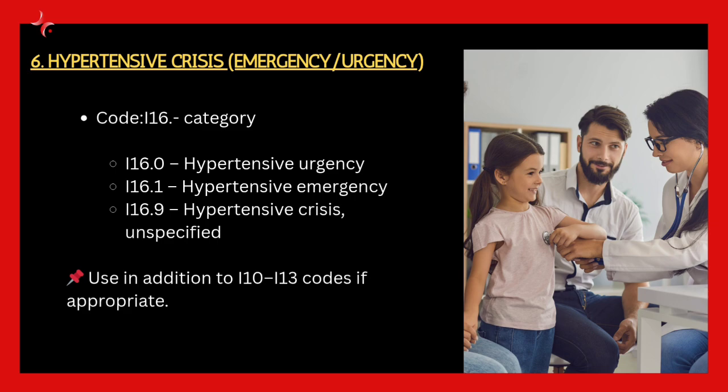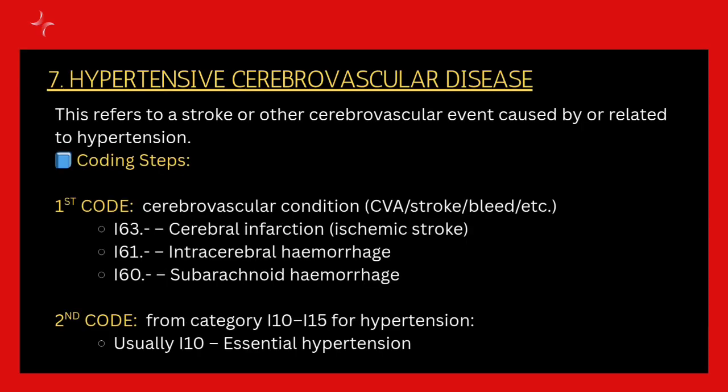Next comes hypertensive crisis, otherwise called hypertensive urgency or hypertensive emergency. The hypertensive crisis code starts with I16 point dash — the dash indicates whether it is urgency, emergency, or unspecified crisis. We should also use an additional code for hypertension from I10 to I13.